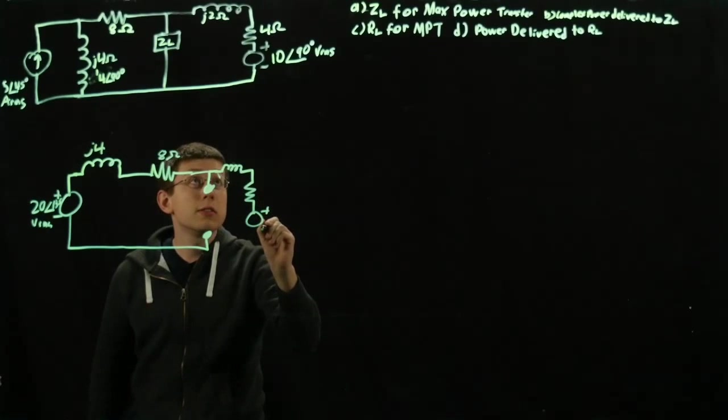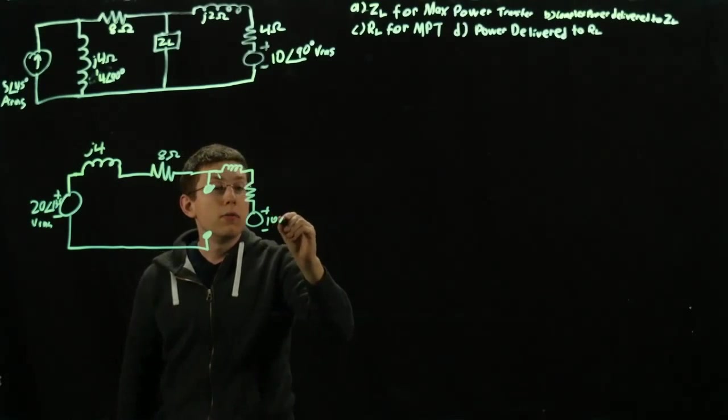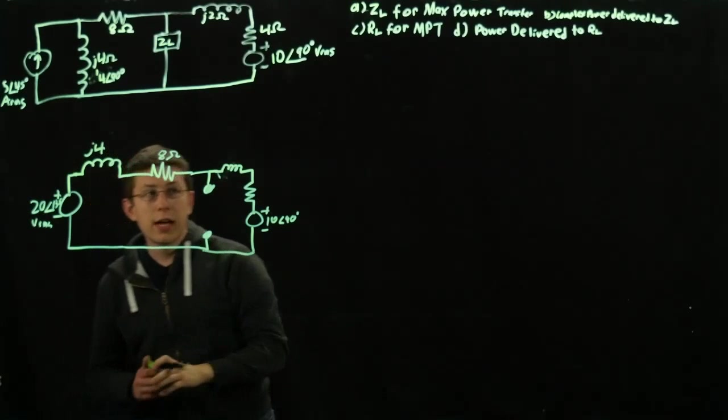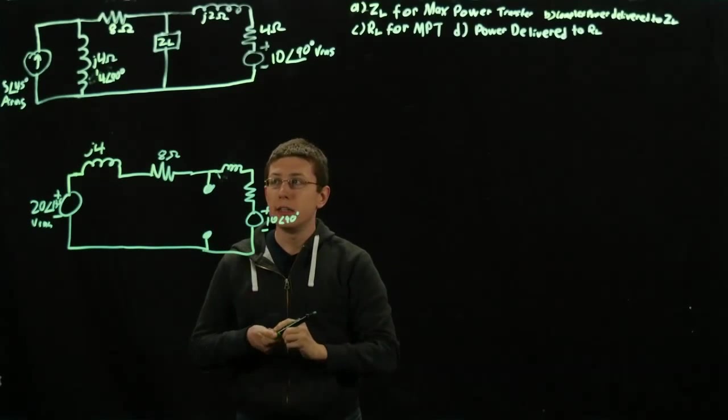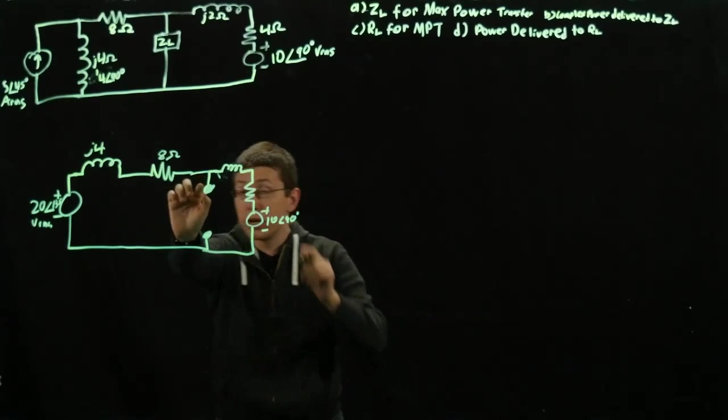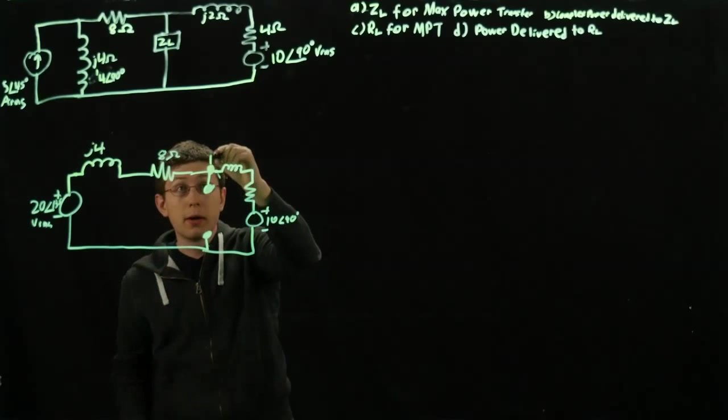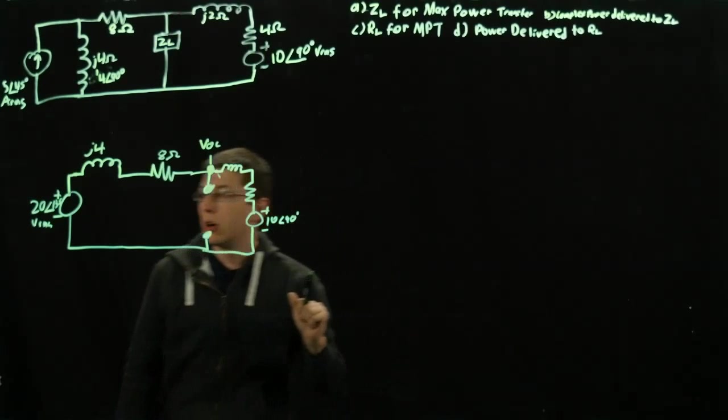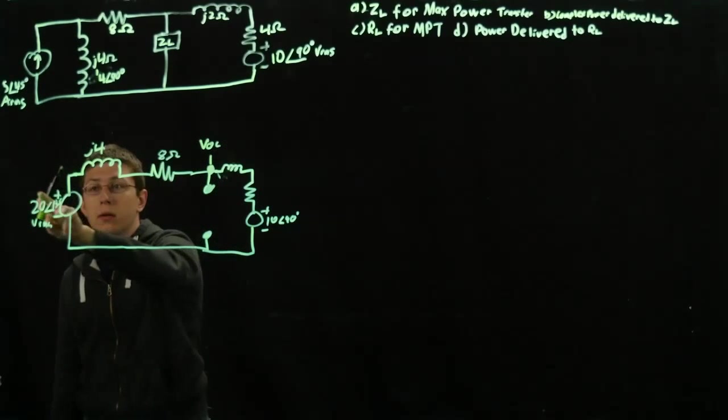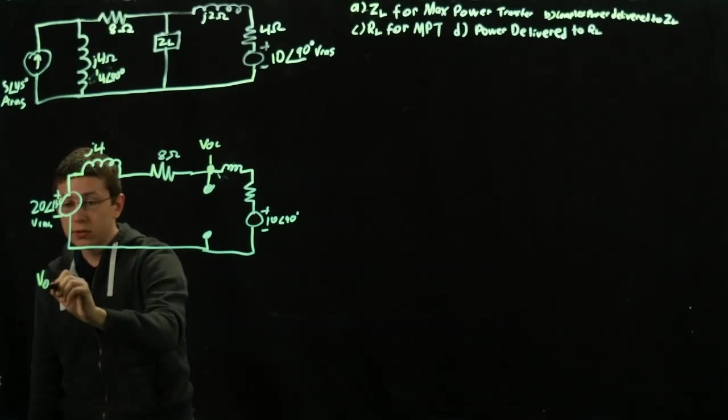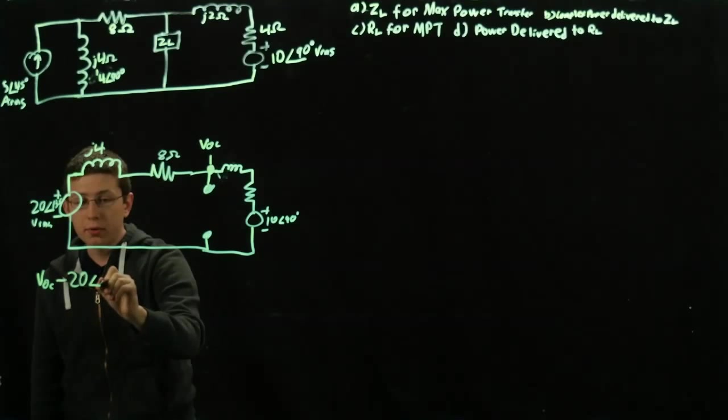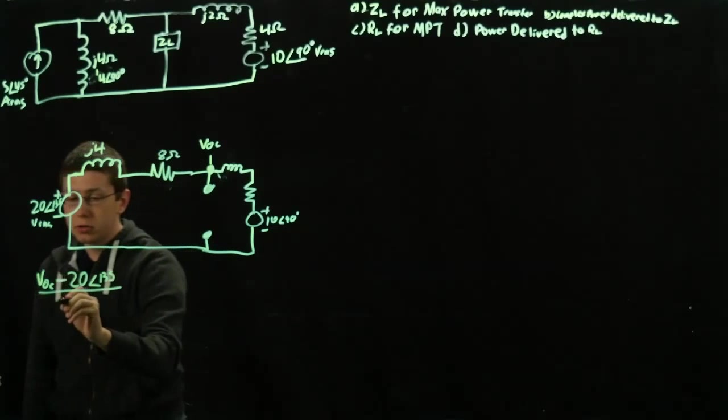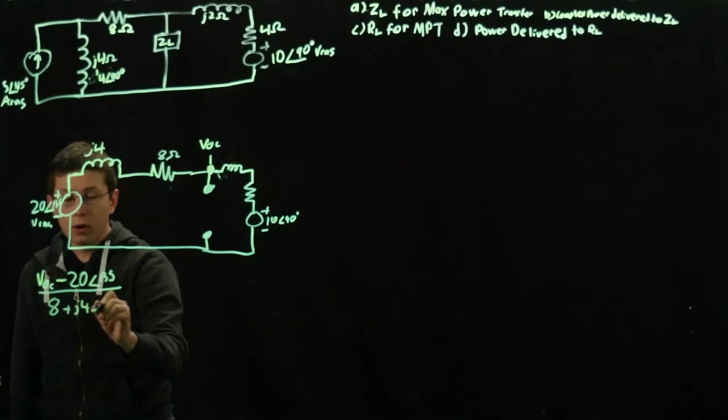This is the same nodal analysis we've done in the past. You just treat the impedances pretty much as if they were resistances. It's not any more difficult than had we done it in DC. We have our voltage here, I'll name it VOC for open circuit. So VOC minus this voltage, VOC minus 20 at 135 over our impedance 8 plus J4 ohms.